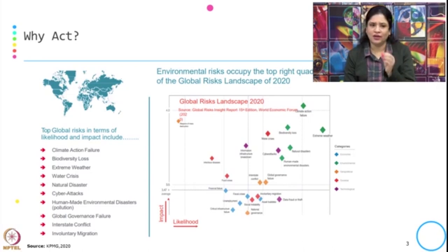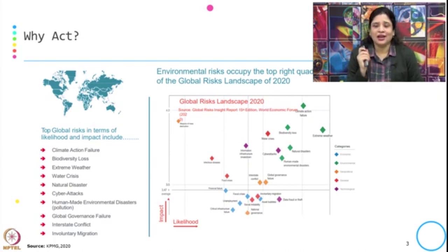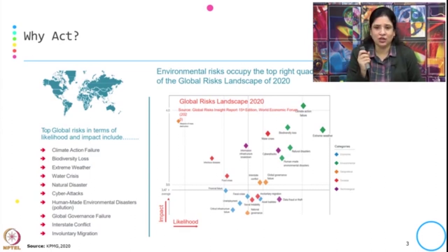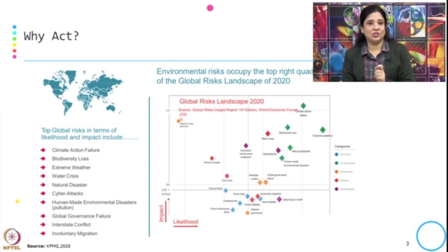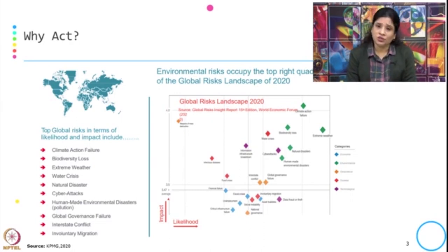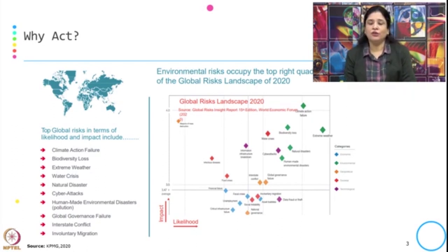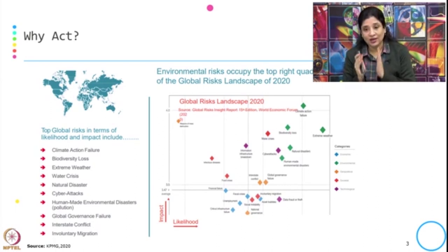During this course, at different points of time, we have addressed many of these risks. This picture, prepared by the World Economic Forum, shows the impact and the global risk landscape — what is coming because of climate action failure, biodiversity loss, and other environmental issues. Environmental risks occupy the top right quadrant of the global risk landscape of 2022. The focus of bringing this picture here is that when we need to reduce or mitigate these risks, we need finance, investment, and funds. Some specific financial instruments and services have been designed in order to manage and mitigate this environmental risk.